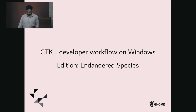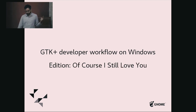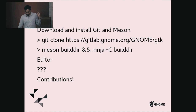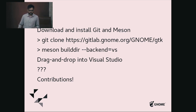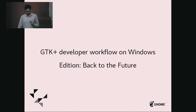This is the workflow that we want. You download Git and Meson, install it, clone your project, and do the same thing you do on Linux — on Windows. This actually works for GStreamer today. We have spent two or three years on this and it works for GStreamer today. We also wanted it to work the same way for GTK. And of course, if you want to work inside Visual Studio, you just drag and drop into Visual Studio, drag into your project, and build your app that way. This also almost works for GStreamer, and for GTK as well we have to do that work.